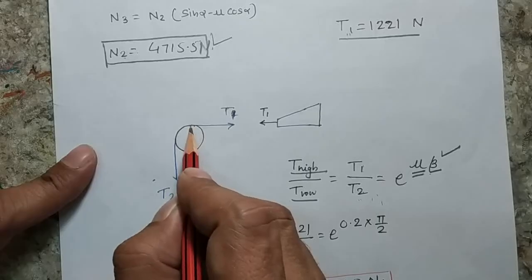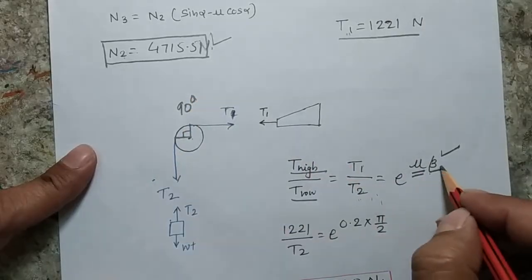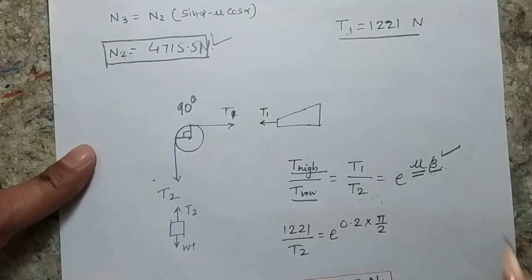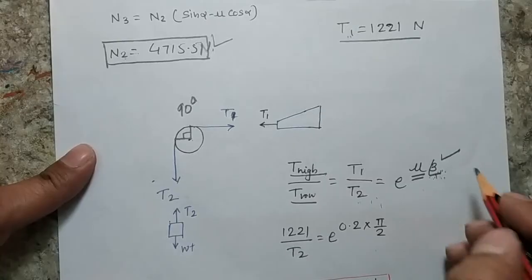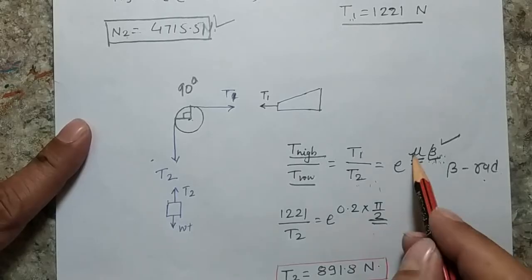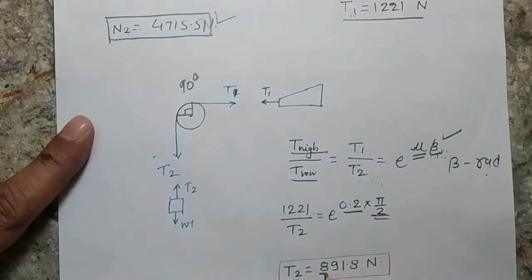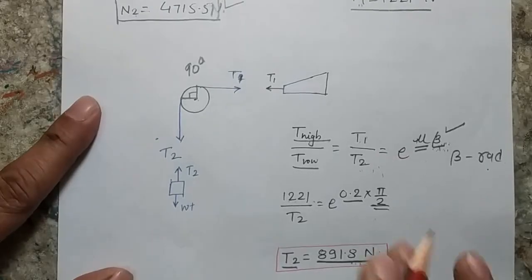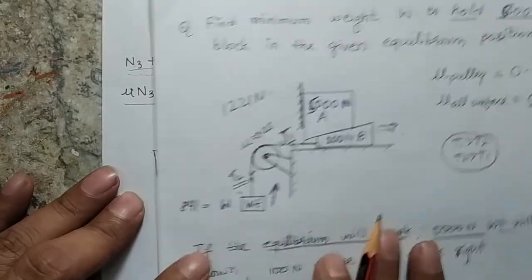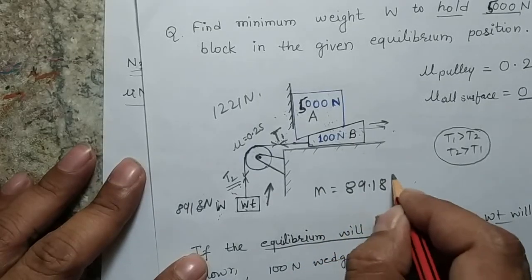In this case, contact starts at one point and ends at another, making the total contact angle 90 degrees, so beta = π/2 radians. My μ is 0.25 and the larger tension T1 is 1221 Newton. Solving the equation, T2 comes out as 891.8 Newton. That means the weight here equals 891.8 Newton, or equivalently the mass of this block is 89.18 kilograms.